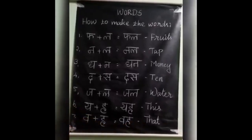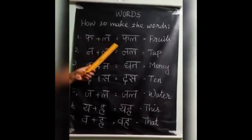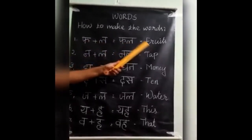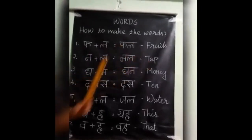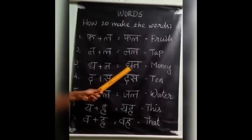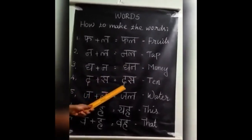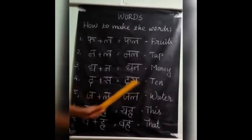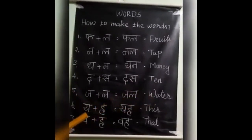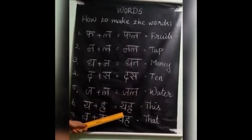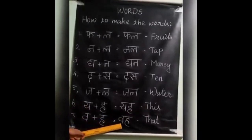Are you clear children? Once again we recall the words — how to make the words. Two letter words only you want to see today. Fa plus la is equal to fal; fal means fruits. Na plus la is equal to nal; nal means tap. Dha plus na is equal to dhan; dhan means money. Dha plus sa is equal to das; das means ten. Jha plus la is equal to jal; jal means water. Ya plus ha is equal to yakh; yakh means this. Va plus ha is equal to vah; vah means that.